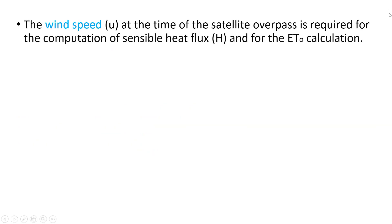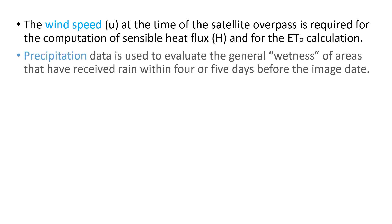The wind speed at the time of the satellite overpass is required for the computation of sensible heat flux and for the reference evapotranspiration calculation. Precipitation data is used to evaluate the general wetness of the areas that have received rain within 4 or 5 days before the image date.